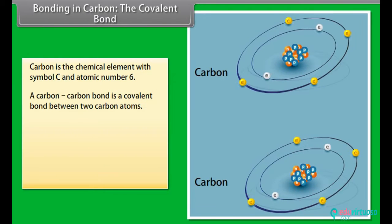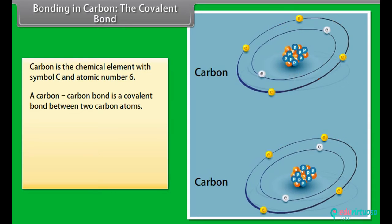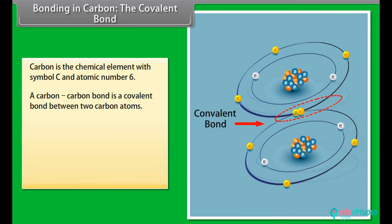A carbon-carbon bond is a covalent bond between two carbon atoms. The most common form is the single bond, a bond composed of two electrons, one from each of the two atoms.